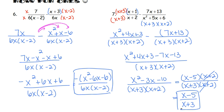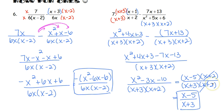Remember the strategy: first multiply the numerators out so you can combine like terms. Once you've simplified into one fraction, see if the numerator can factor again to check if anything is able to cancel.